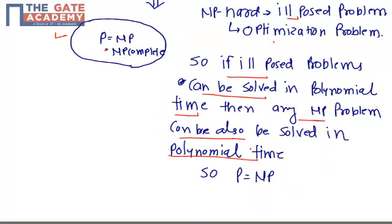To use an analogy: if the worst case of any algorithm can be solved in O(1) time, then any well-known algorithm can also be solved in a minimal amount of time. Similarly, if ill-posed NP-hard problems can be solved in polynomial time, then any NP problem can also be solved in polynomial time.